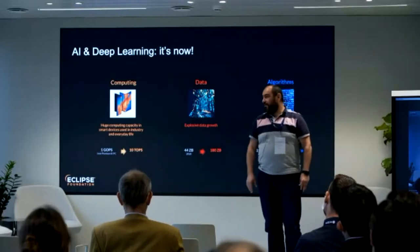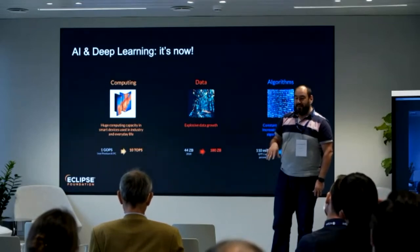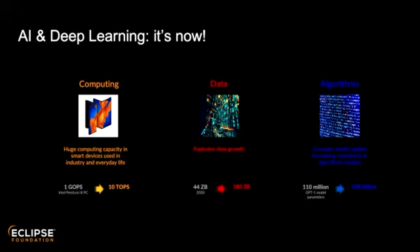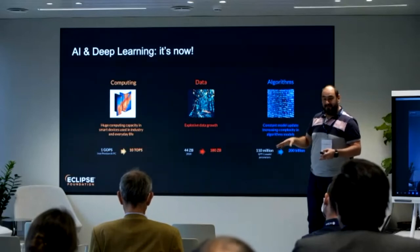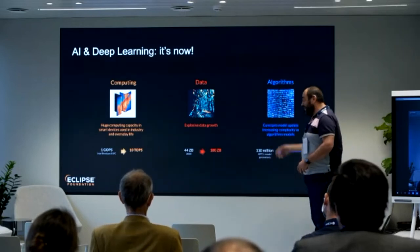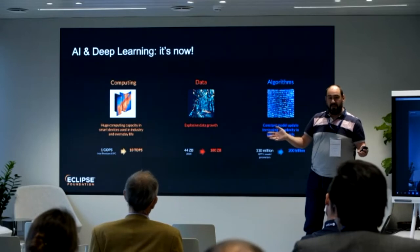Why deep learning is important now: first, we have a dramatic increase in computing capacity. A simple phone today is maybe 100% more powerful than five years ago, so deep learning can be implemented on any device, including a phone. We also see a huge amount of data — in 2020 we estimate 44 zettabytes, growing to 180 in five years. Algorithms are also becoming more and more complex with a large number of parameters.